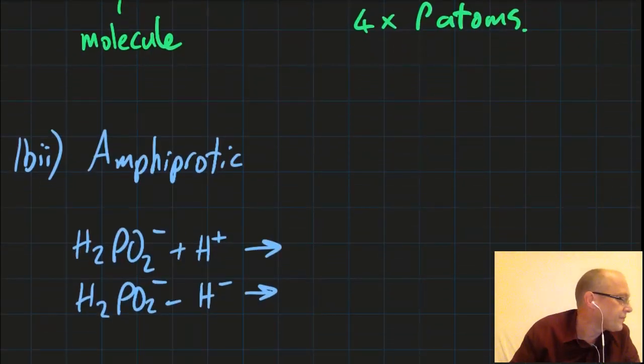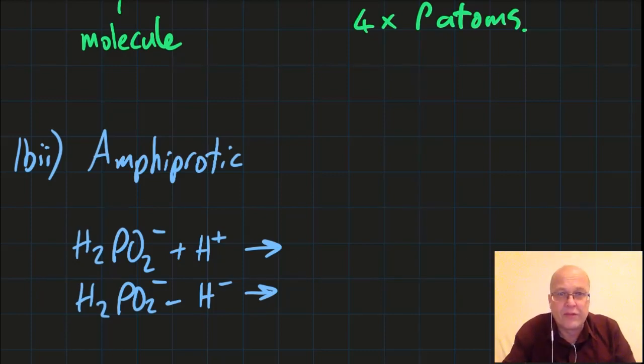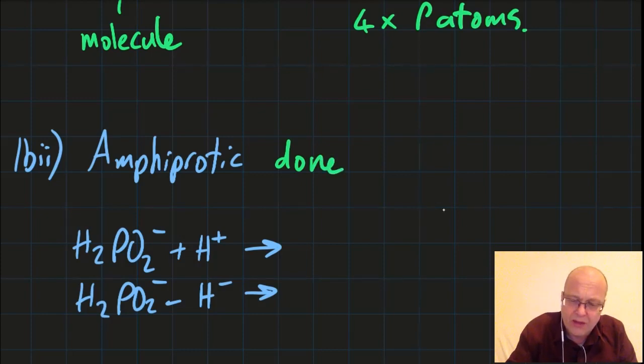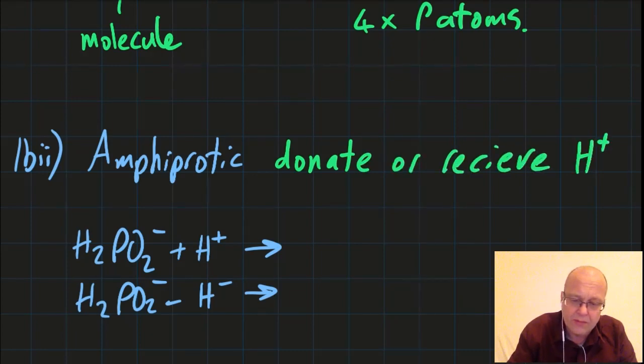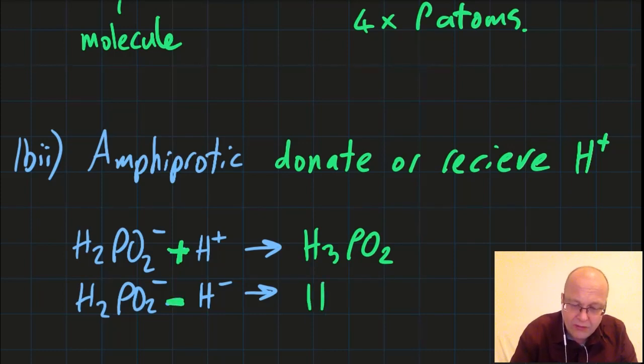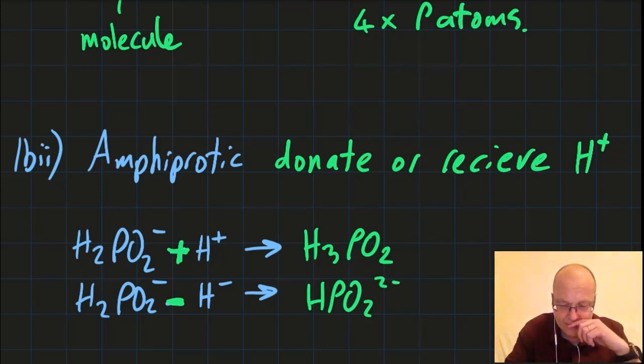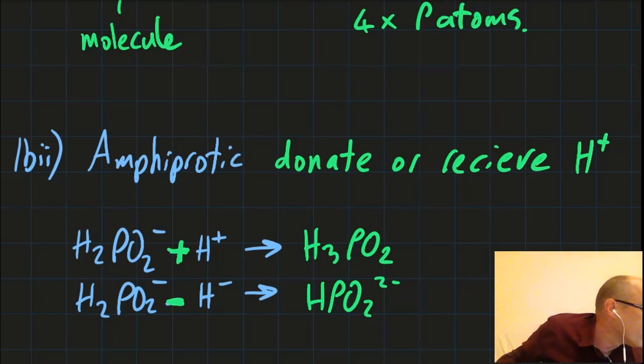Amphiprotic. So amphoteric is where a substance can act as either an acid or a base. But amphiprotic is where a substance can act as either a Bronsted-Lowry acid or a Bronsted-Lowry base. So that means amphiprotic means the substance can donate or receive a proton. And show some equations. If I'm adding a proton, that's going to be H3PO4. And if I'm removing a proton, that's going to be HPO2 2-.